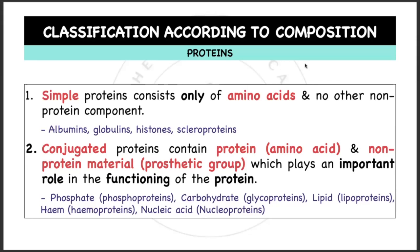Conjugated proteins contain protein which are the amino acids and non-protein material. This non-protein material is called the prosthetic group. They play an important role in the functioning of the protein. So simple proteins have only amino acids; conjugated proteins have amino acid plus prosthetic group.